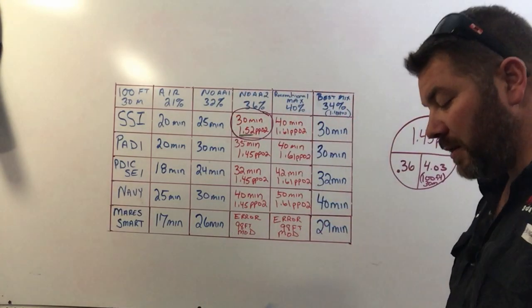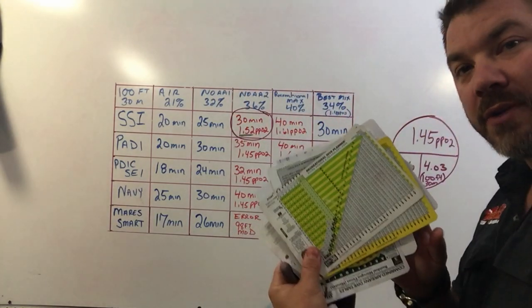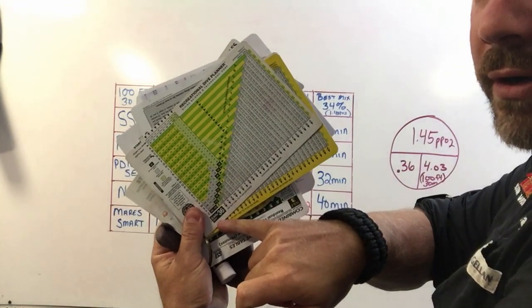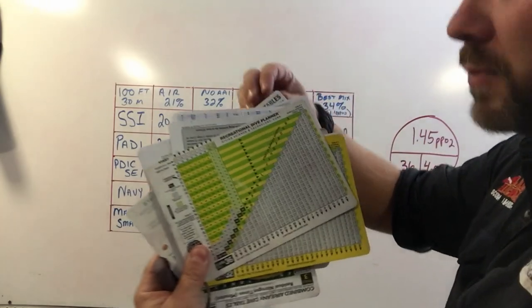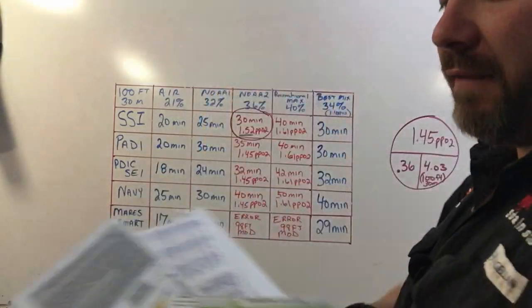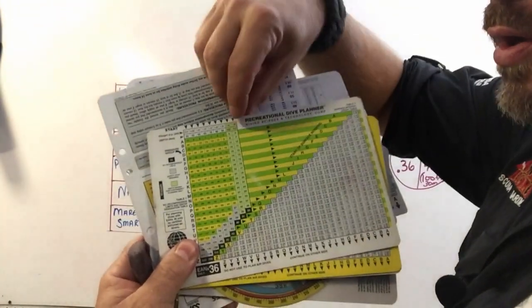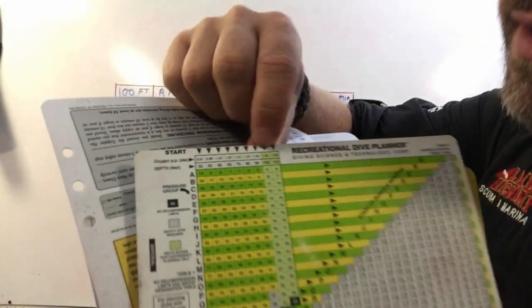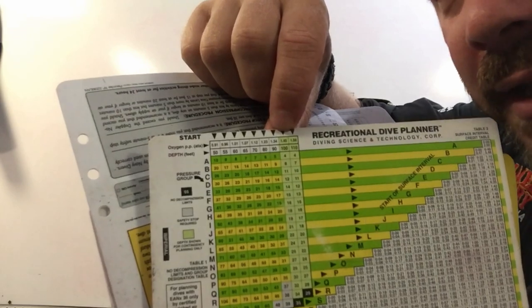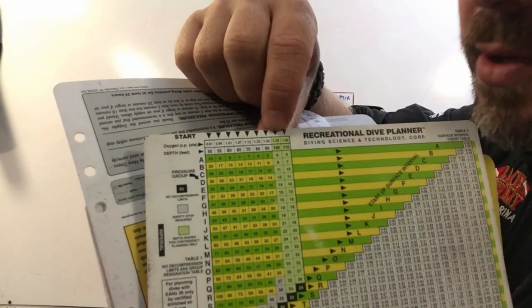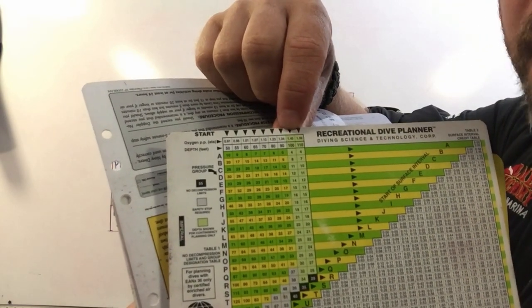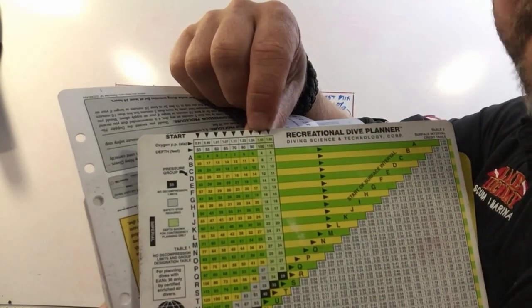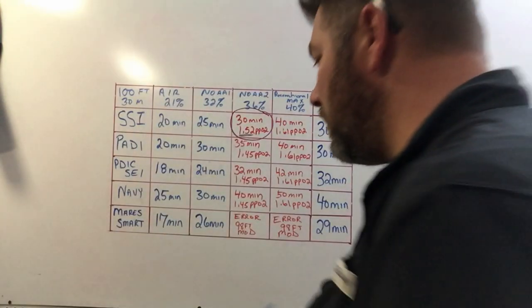I've got a set of tables here from another agency that we train through as well, and it's simply their enriched air 36 tables. If I go over here to 100 feet up top, you can see there's 100 feet and directly above it, it tells me what my partial pressure of O2 is at 100 feet using 36 percent. It simply says 1.45, so that table matches up with the math.